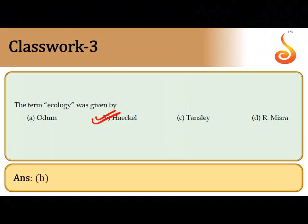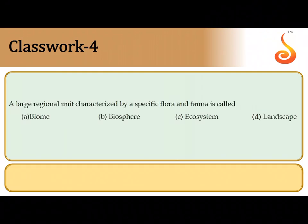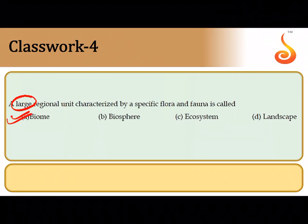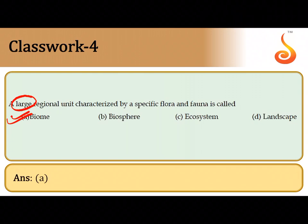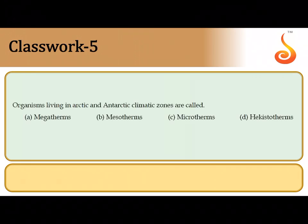The third question: the term ecology was given by Ernst Haeckel, who coined the science of studying organisms in relation to their surrounding environment. The fourth question asks about a large regional unit. When something is spread over a vast geographical area, it is a biome — a group of ecosystems spread over a vast geographical area — so the answer is option A.